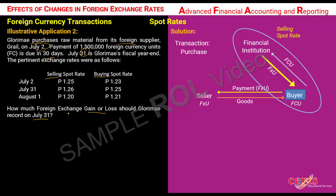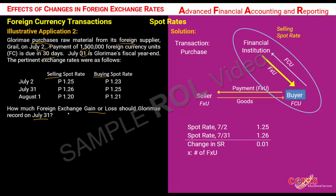Next, since the spot rates are given as a direct exchange rate, we simply have to take a look at the change in the exchange rates from the transaction date July 2 to the reporting date July 31. The difference in the spot rate is 0.01, and we multiply that by the number of foreign currency units involved in this transaction.